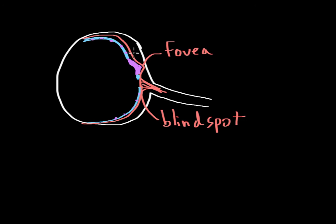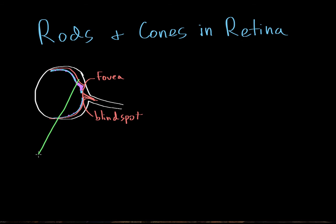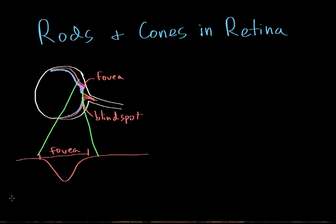Let's zoom in on the fovea to make sense of what we're looking at. If we zoomed in on the fovea, we would see the retina dimpling in at that region. Rods are found outside of the fovea — there are a whole bunch of rods specifically in the periphery, lining the outer regions of the eye.